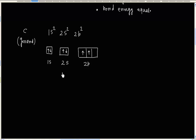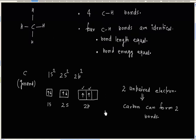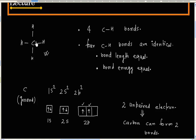Now, in the ground state, we have only 2 unpaired electrons — this one is unpaired and this one is unpaired. So we have 2 unpaired electrons. This means, in ground state, carbon can form a maximum of 2 bonds. But we know in the case of methane we have 4 bonds.